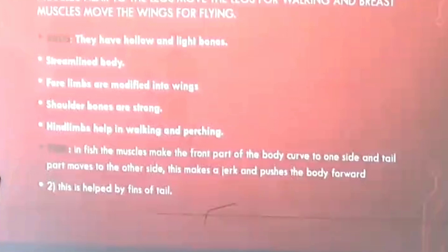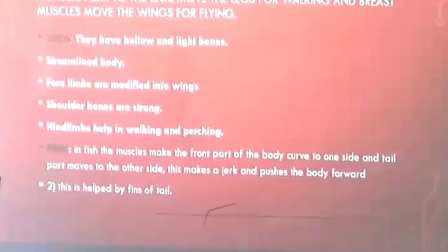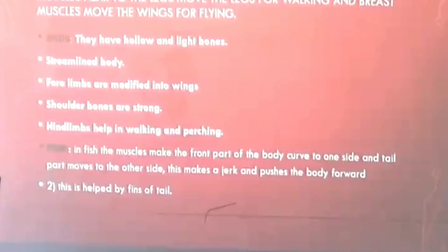Let's see movement in birds. Birds have hollow and light bones, a streamlined body, and four limbs modified into two wings. Shoulder bones are very strong, and hind limbs help in walking and perching. In fish, the muscles make the front part of the body curve to one side and the tail part moves to the other side. This creates a jerk and pushes the body forward, allowing the fish to move in water. The fins of the tail help in changing direction.